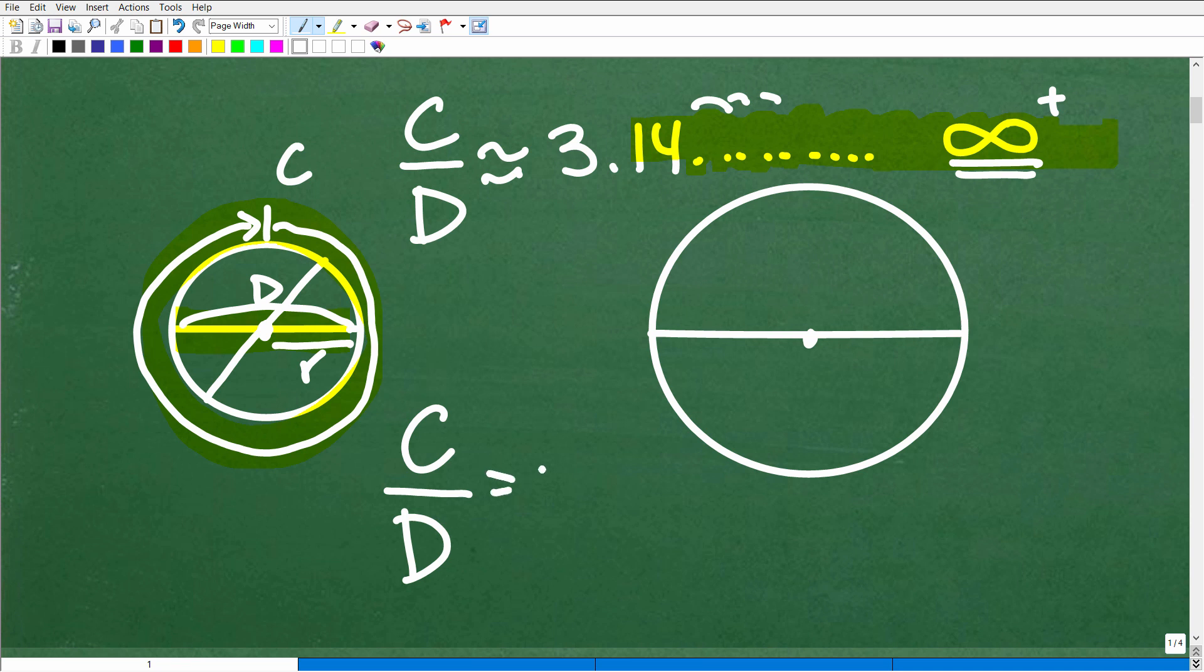There's also a fractional approximation of pi, which is 22 sevenths. So this number, because it goes on infinitely, what we do is we just assign a variable to it, a symbol that represents all these infinite digits, and that is what pi is. It represents this number. And this type of number in mathematics is what we call an irrational number.